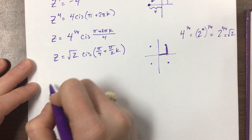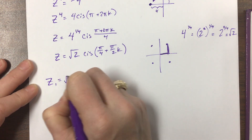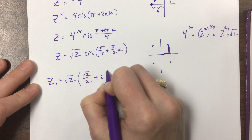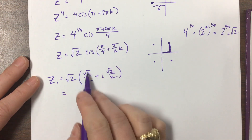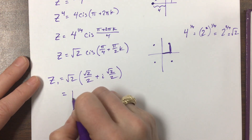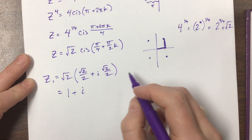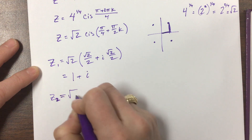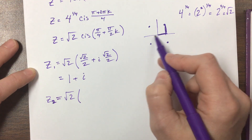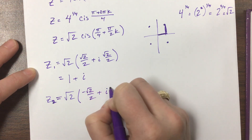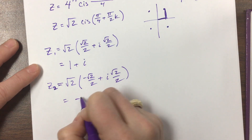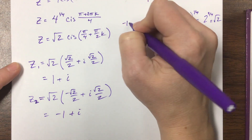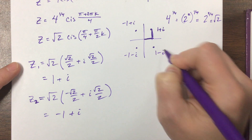To find all of them: the first root z₁ equals √2 times cis(π/4), which gives real part √2/2 and imaginary part √2/2, so multiplying through that becomes 1 + i. Then z₂ in quadrant 2 has a negative real part and positive imaginary part, giving negative 1 + i. By the same pattern, z₃ is negative 1 minus i, and z₄ is 1 minus i. Those are the four fourth roots.